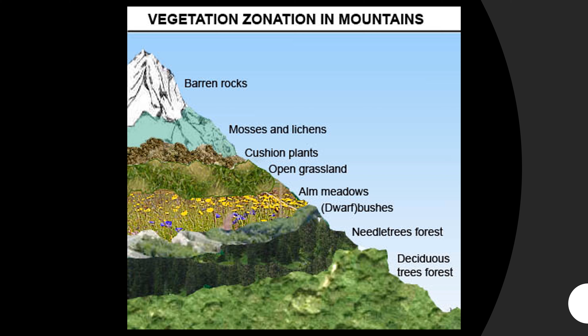In the mountainous region, the climate and vegetation change according to altitude. In the Himalayas, for example, the foothills are quite warm, and here we mostly get deciduous trees such as teak and sal. With increasing altitude, the temperature decreases, and the area is taken over by coniferous forests like pines and firs. There are bushes, meadows and grasses which give way to mosses and lichens at higher elevations where the temperature is very low.